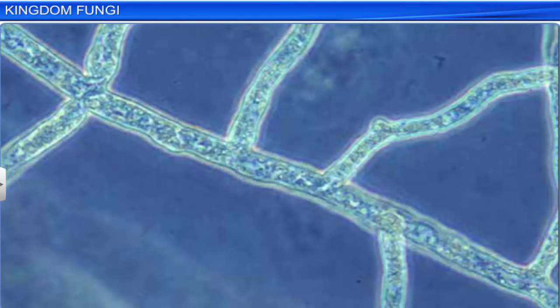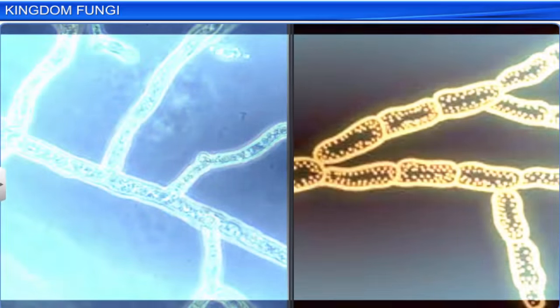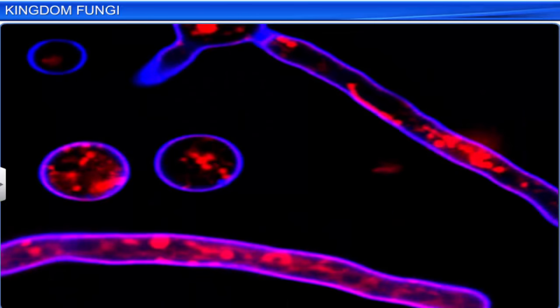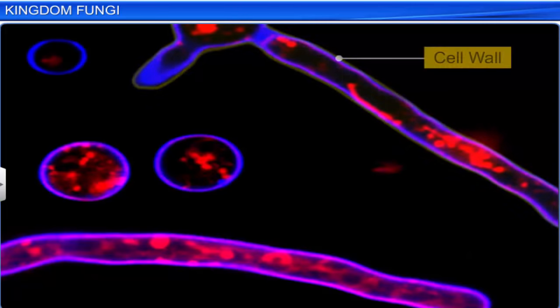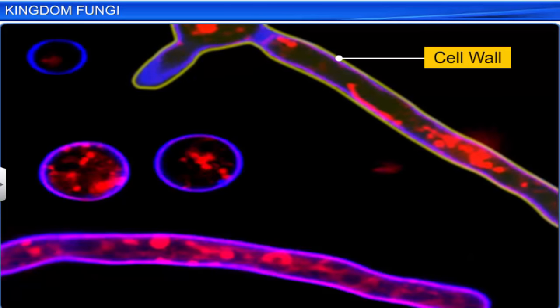There are two types of hyphae. The first type is made up of continuous tubes filled with multinucleated cytoplasm and is called coenocytic hyphae. The second type of hyphae has septae, or cross walls. Apart from hyphae, fungi are distinguished by their cell walls, which are made of chitin and polysaccharides.